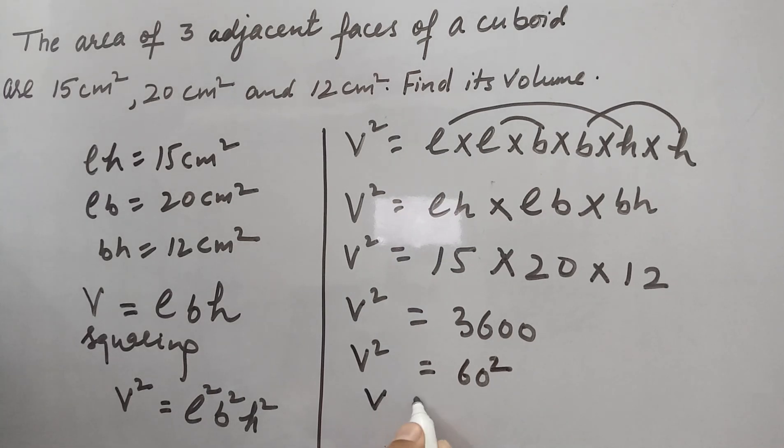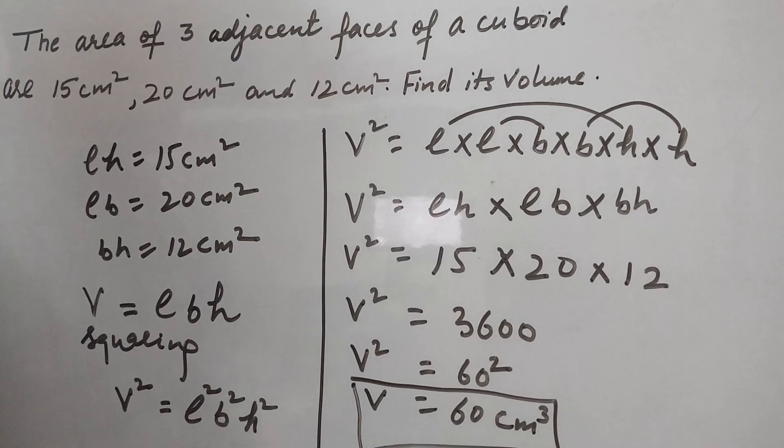So it means volume is 60 cm³. So this way we can find out the volume of this cuboid. So thanks for watching.